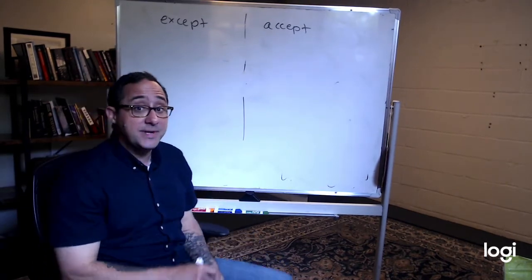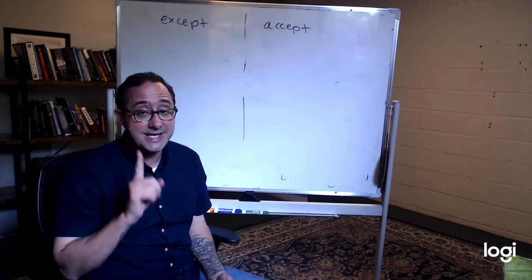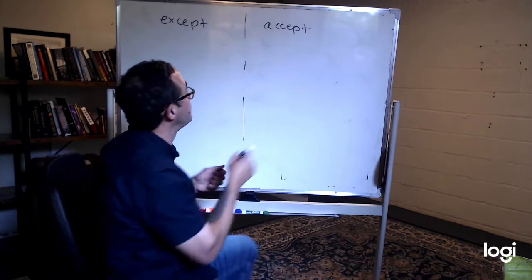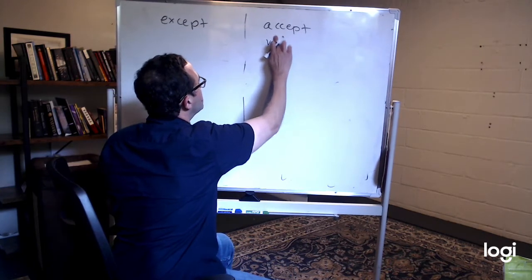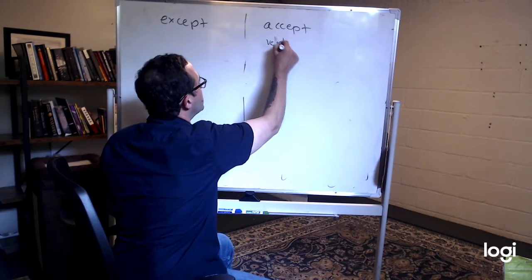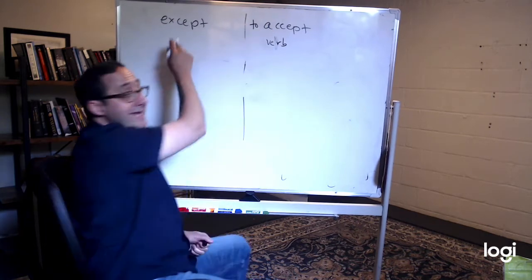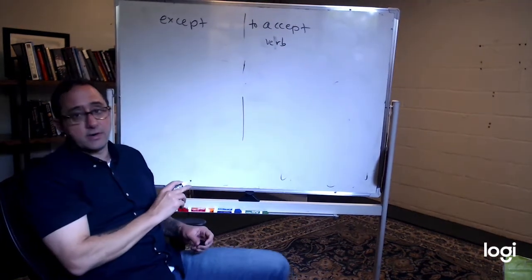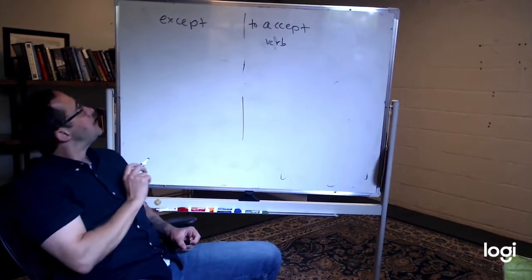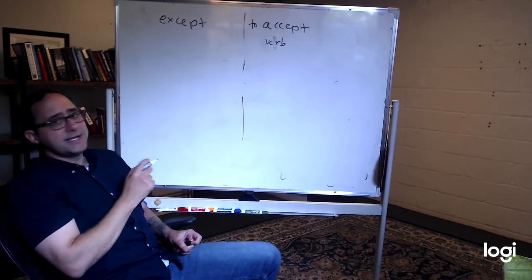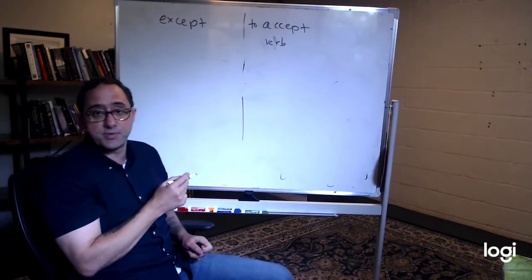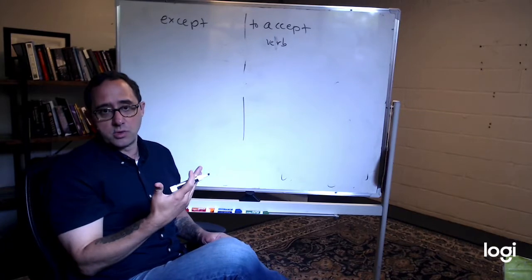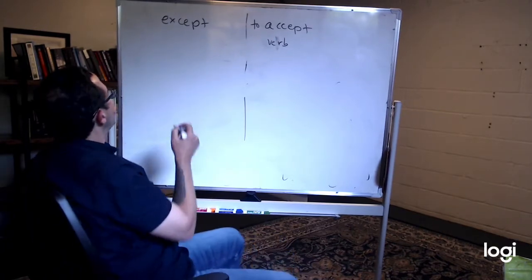Accept can be a verb. And that's the key. If you feel like it's a verb, it's going to be accept. To accept. Except is not a verb. It is, I believe, a preposition. It's a preposition. It's a function word.